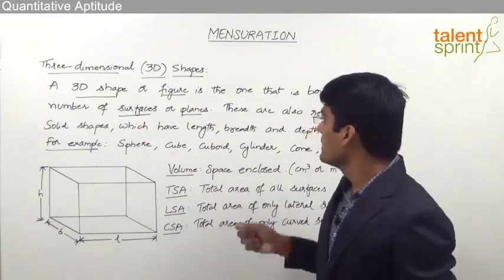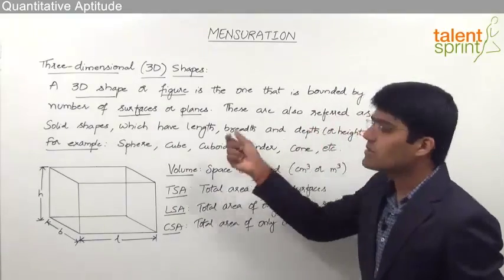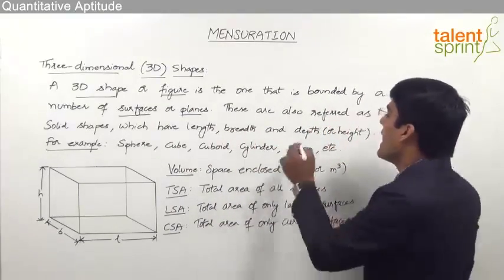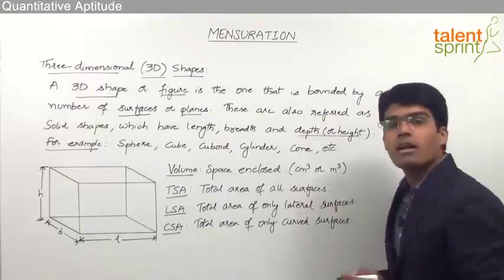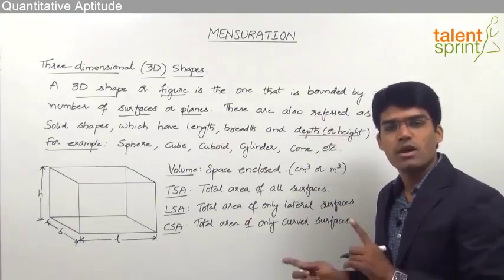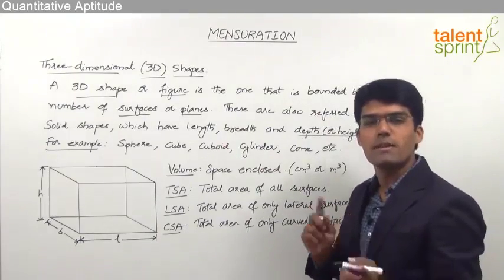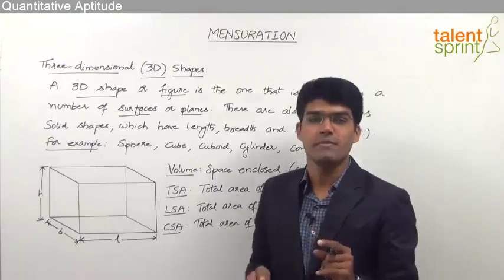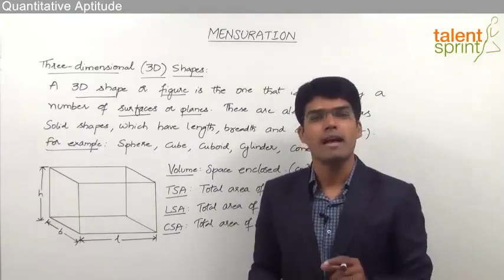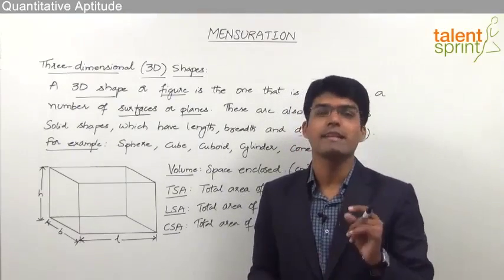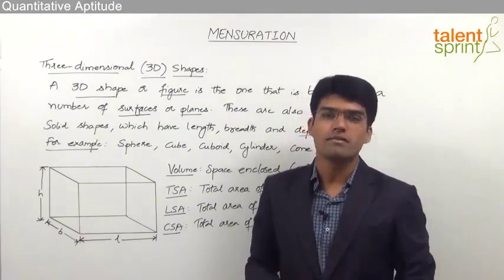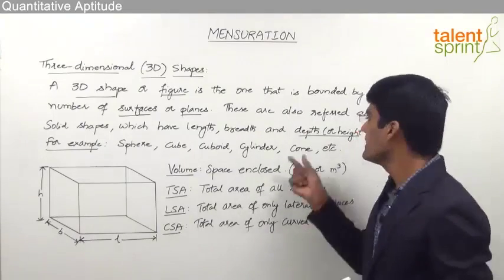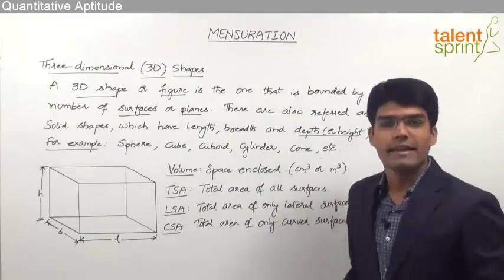These are also called solid shapes which have got length, breadth and depth or height. If you try to compare the 2D shape with a 3D shape, in a 2D shape, as we have discussed, there is no depth or height — it is negligible or zero. But in case of a 3D shape, there is a definite depth or height.